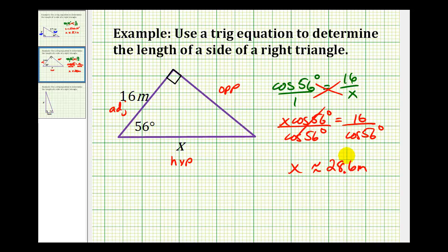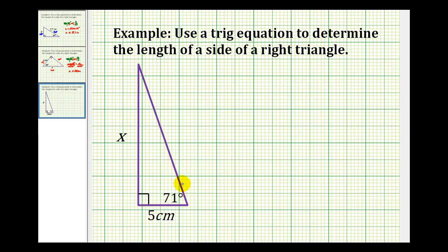Let's look at one more example. We're given this angle that measures 71 degrees. This side would be the opposite side. This side opposite the right angle is the hypotenuse, so this side would be the adjacent side.